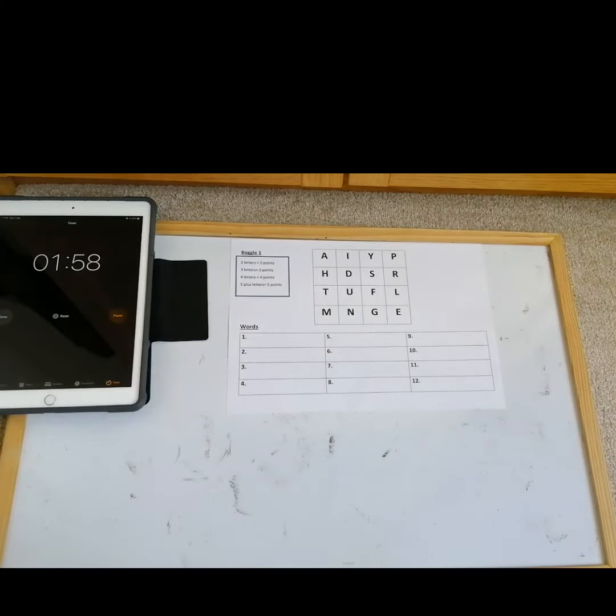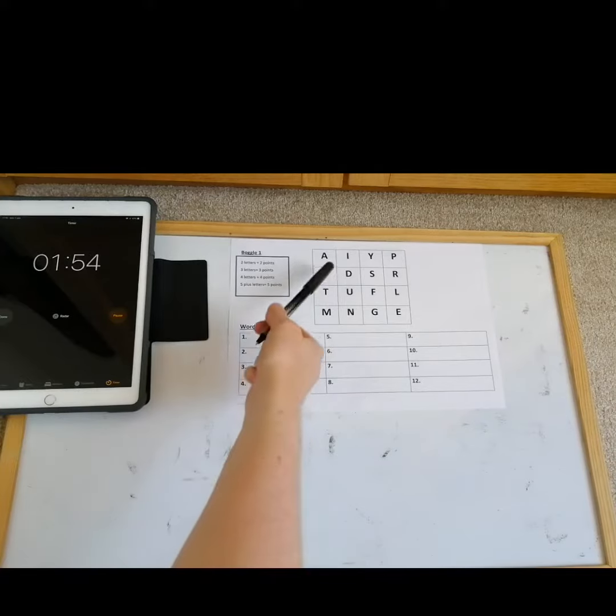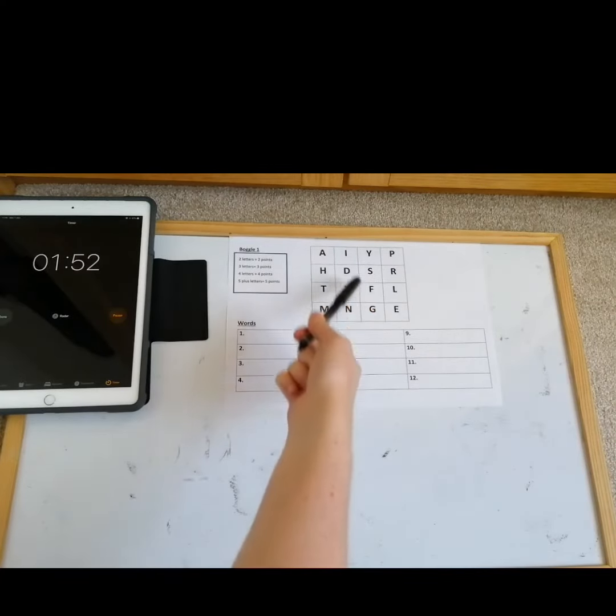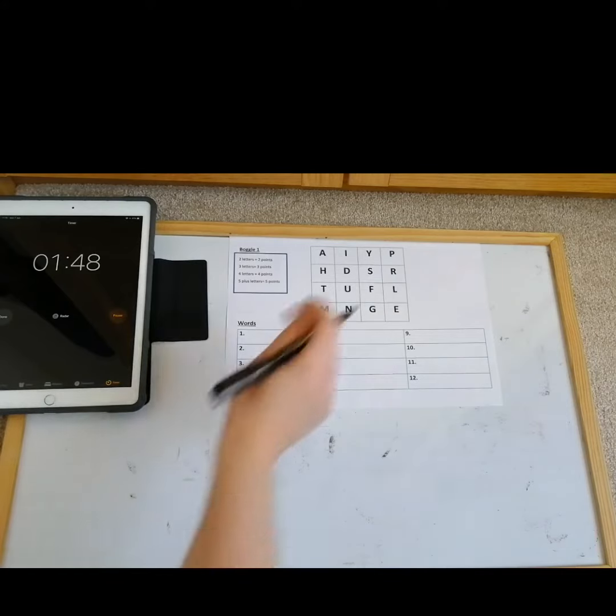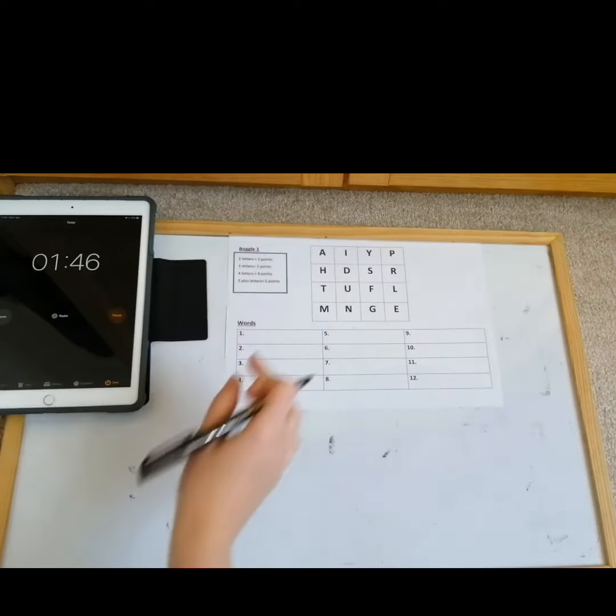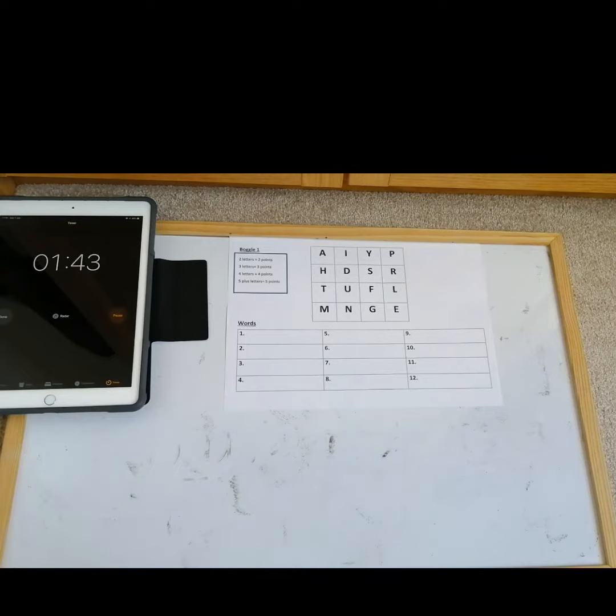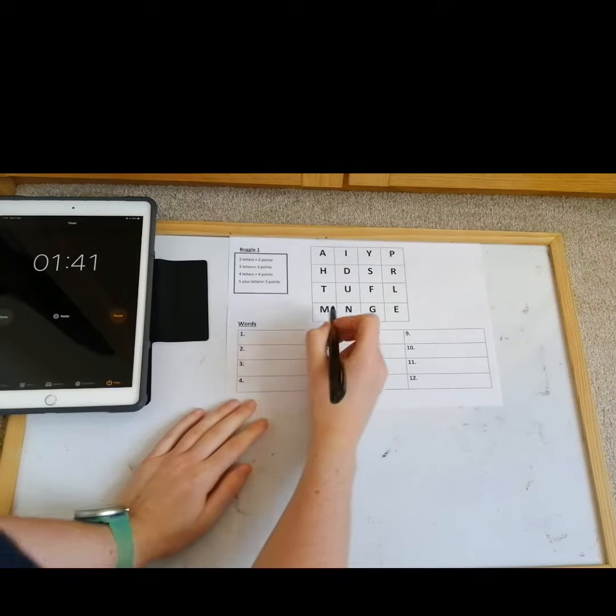Okay, so remember you can go across the way, you can go down the way, you can go diagonally as long as the squares are touching at some point, and you can only use the one letter once in one word.